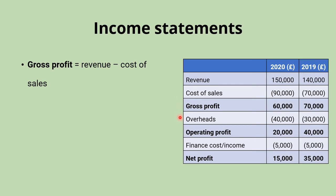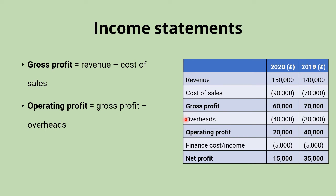Next are overheads, sometimes referred to as fixed overheads or expenses. These include rent, heating, lighting, and equipment — costs which aren't directly going into making the product but are part of the running costs of the factory. Operating profit is then calculated as gross profit minus overheads. In 2020, gross profit of £60,000 minus overheads of £40,000 gives operating profit of £20,000.